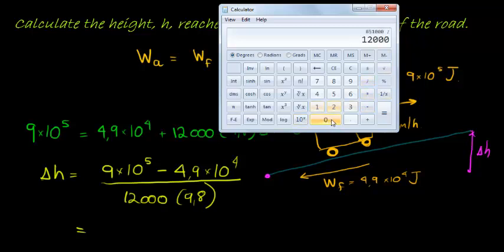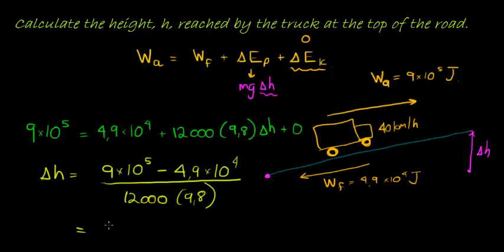...by 12,000 (the mass of the truck) and divided by 9.8. We get 7.24 meters, and that's a reasonable slope. 7.24 meters is the height of the slope. Well done.